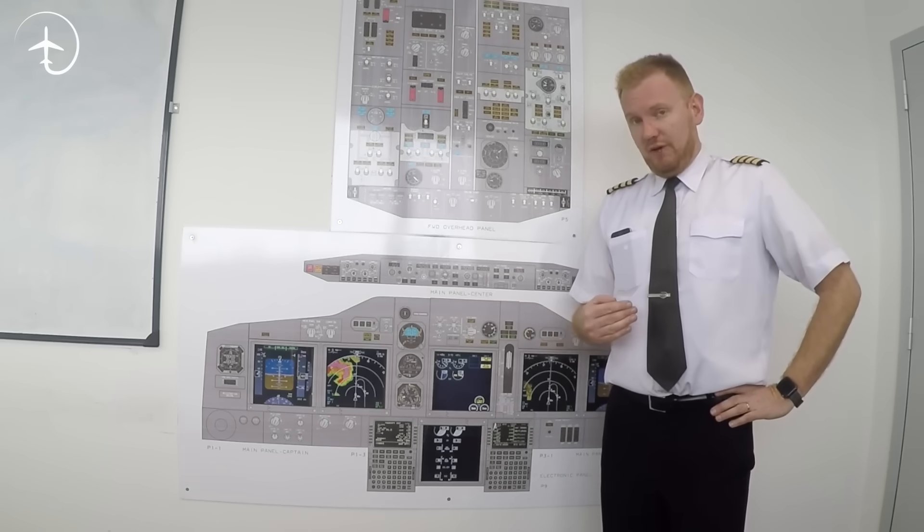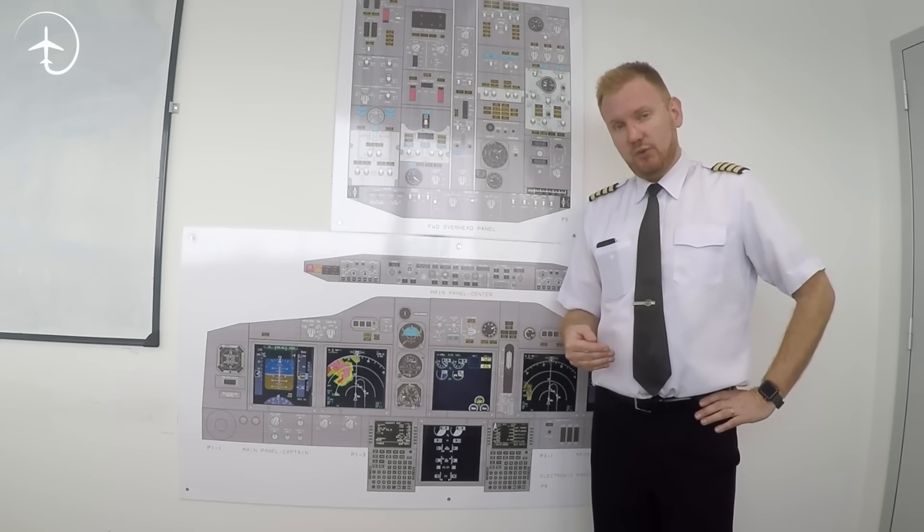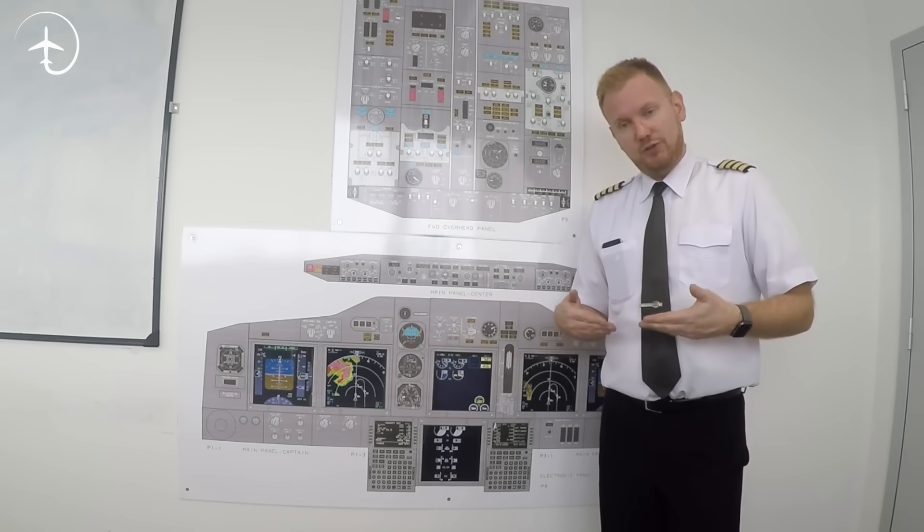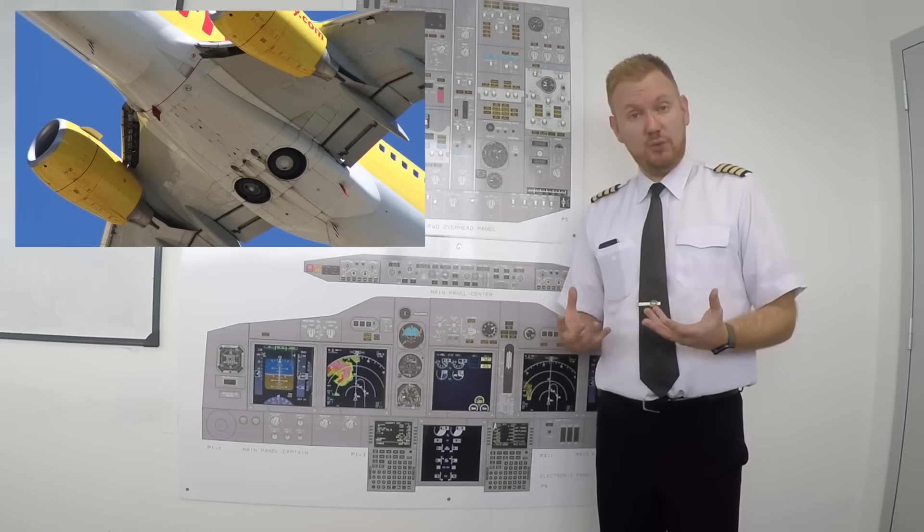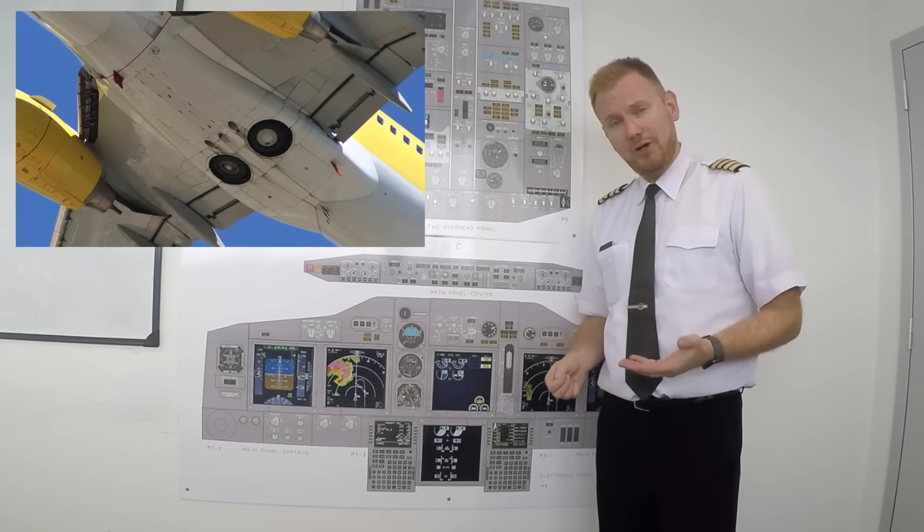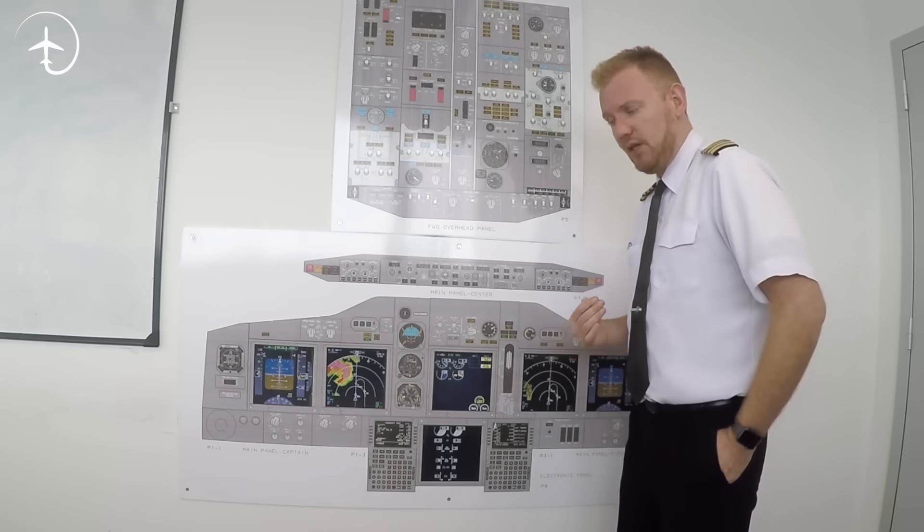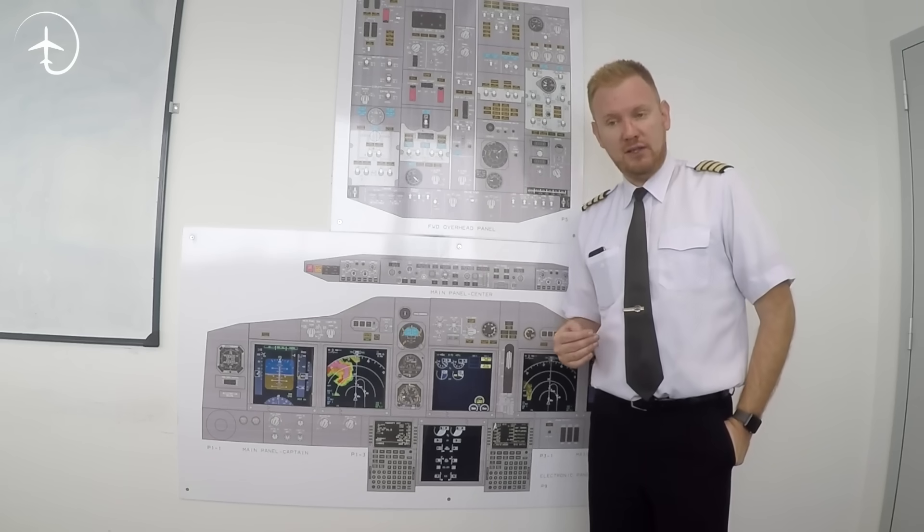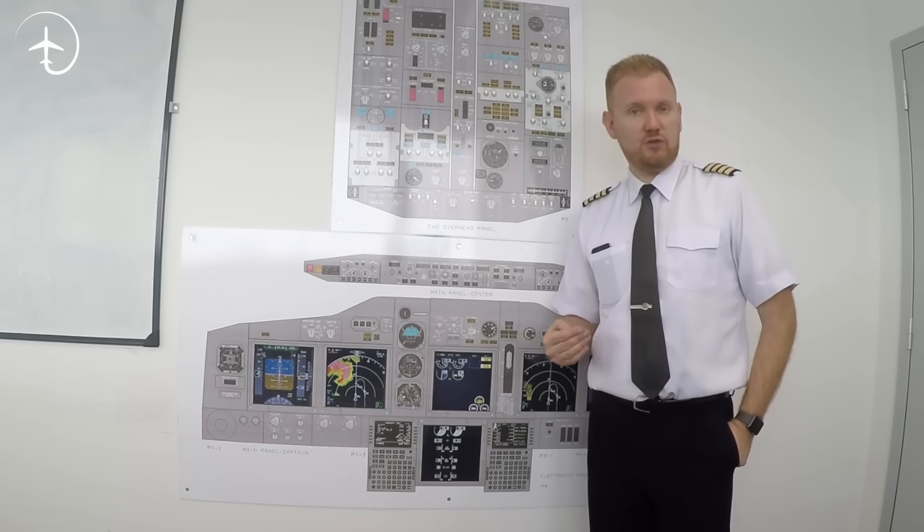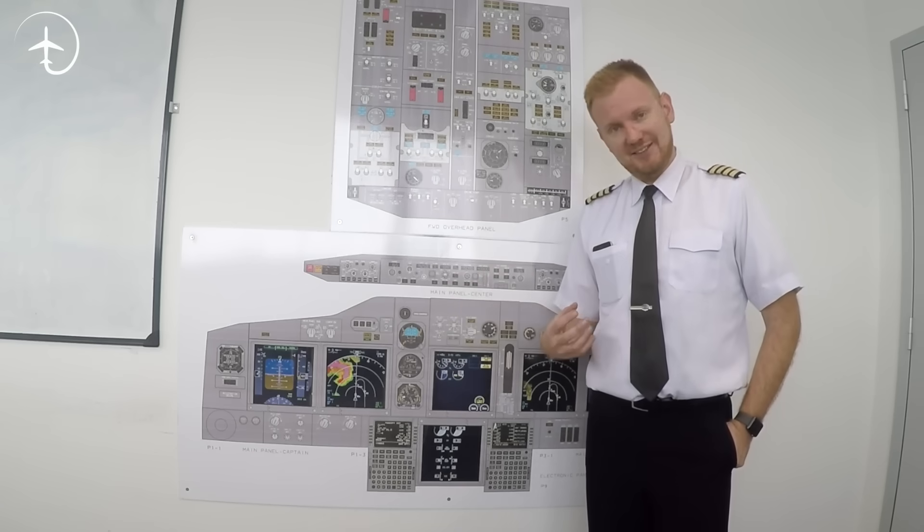If any one of you have seen a Boeing 737 takeoff you might have noticed that as the landing gear gets fully retracted you can still see the tires being fully exposed to the outside air. Now why is this? Well in order to understand this you once again have to get back to when the 737 family was first constructed. So you have to go back to the 1960s.